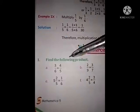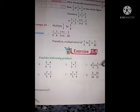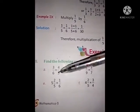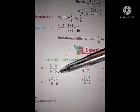See, exercise 5.4. Find the following product. Here, some fractions are given. Then, see, this is 3 by 6 into 4 by 5.